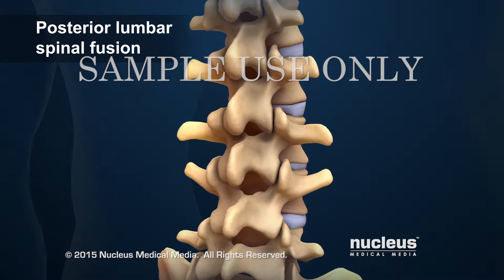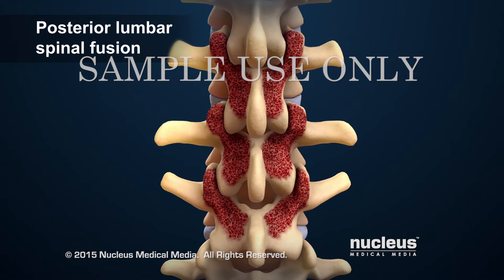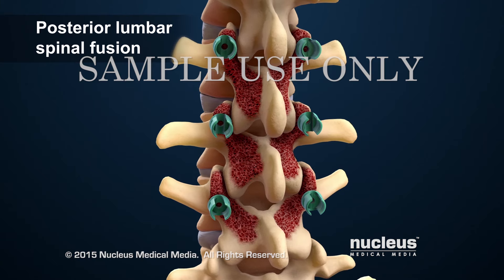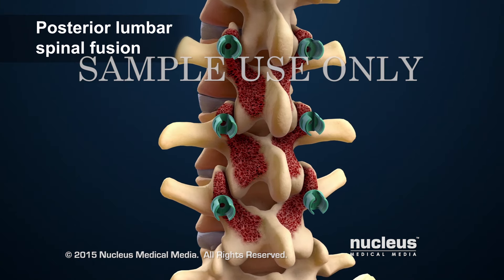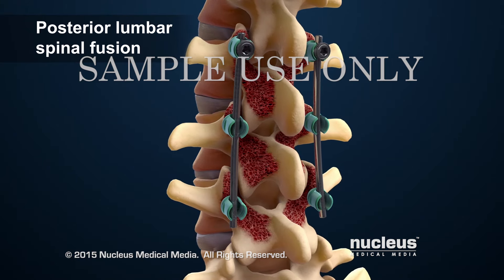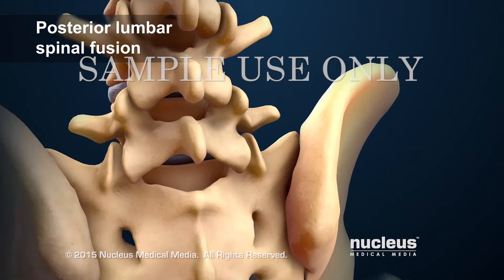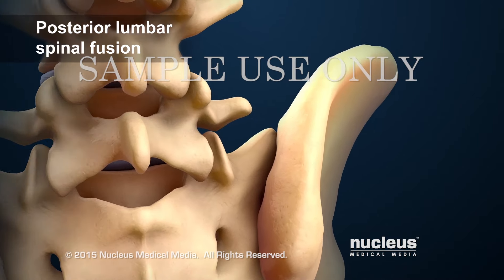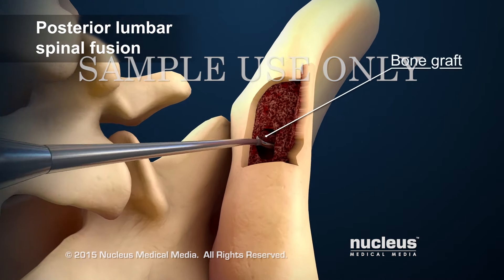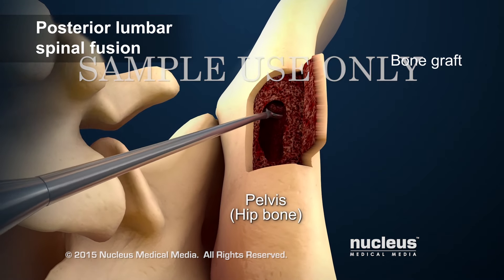The outer surfaces of the bones will be removed to prepare for fusion. The surgeon will place screws into the vertebrae. Rods will be placed alongside the vertebrae and attached to the screws.